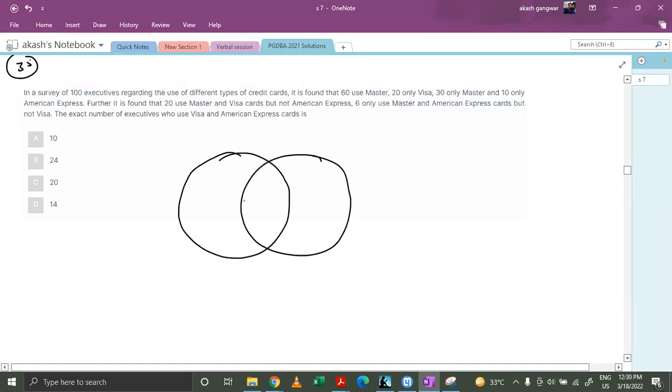So you make a Venn diagram over here. This is American Express, this is Visa, this is Mastercard. It's found that 60 use Mastercard, 20 only Visa, so this number is given as 20. 30 only Mastercard, this is 30, and 10 only American Express.